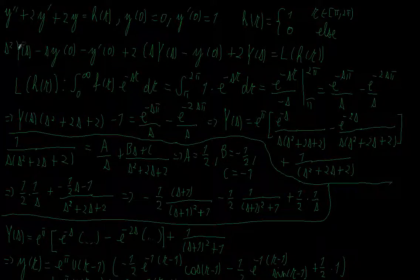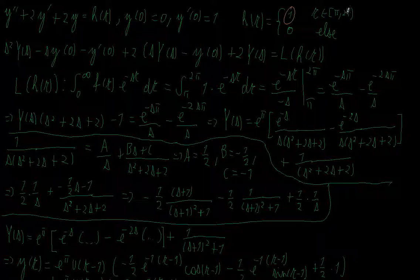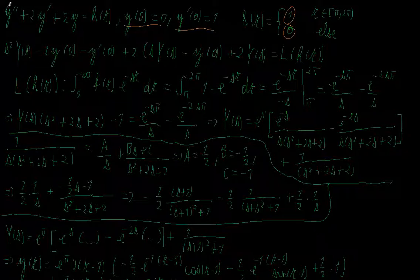I have the differential equation y'' + 2y' + 2y = h(t), where h(t) is defined as 1 if t is between π and 2π, and 0 elsewhere. The initial conditions are y(0) = 0 and y'(0) = 1. I want to solve this differential equation using the Laplace transform.